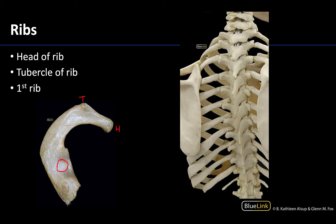Looking at the posterior view, you can see all these spinous processes and you can see that the head is heading towards the body of the vertebrae — that's where it will articulate — whereas the tubercle is going to articulate with the transverse process of certain vertebrae.